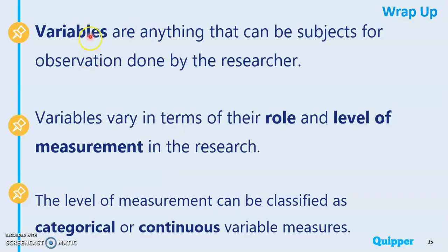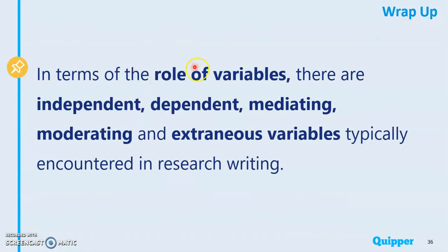Let's wrap it up. Variables are anything that can be subjects for observation done by the researcher. Variables vary in terms of their role and level of measurement in the research. The level of measurement can be classified as categorical or continuous variable measures. In terms of role of variables, we have independent variable, dependent variable, mediating variable, moderating variable, and extraneous variables.